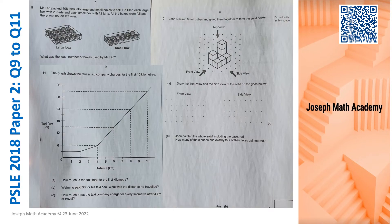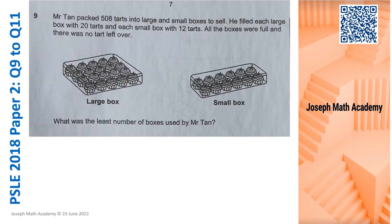The three questions that I'm going to discuss today, questions 9, 10, and 11, are on this particular slide. I'm going to zoom in to question 9 now. First and foremost, I am going to annotate. Mr. Tan packed 508 tarts into large and small boxes. The large one contained 20, and the small ones contained 12 tarts. So we have these two pieces of information, and there's a very important information here. All the boxes used, they were fully packed, and zero remainder. So when they are fully packed with no remainder, that means it must be divisible by both 20 and 12 in the packing process.